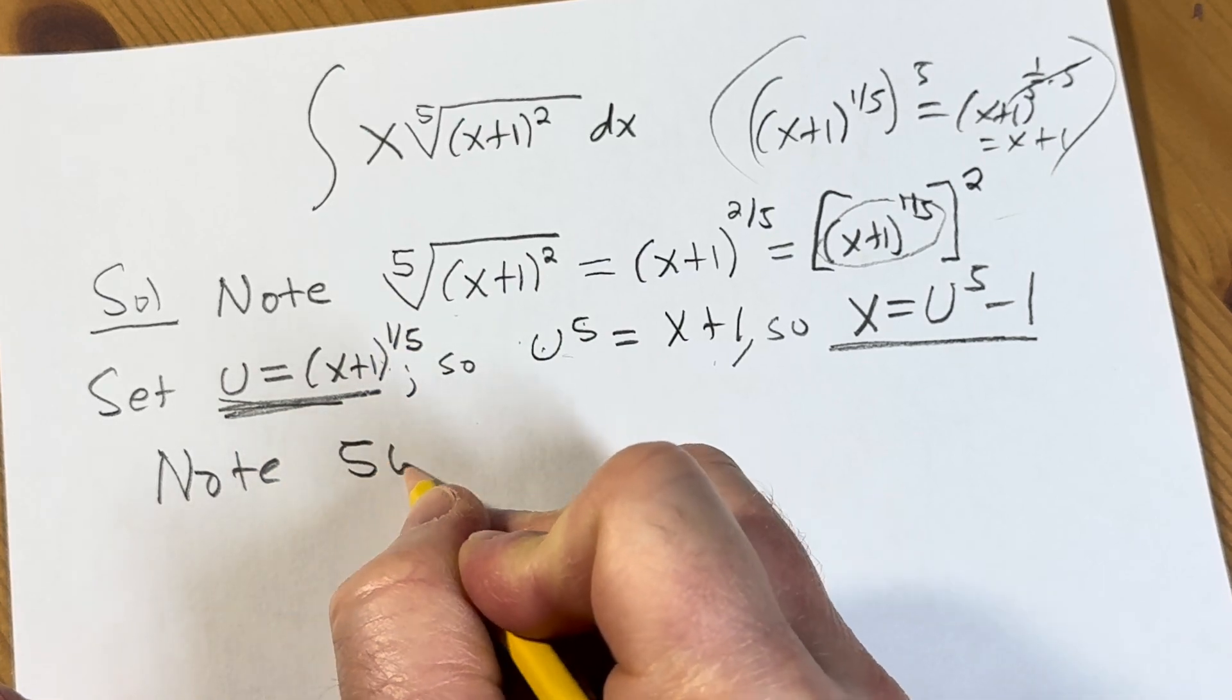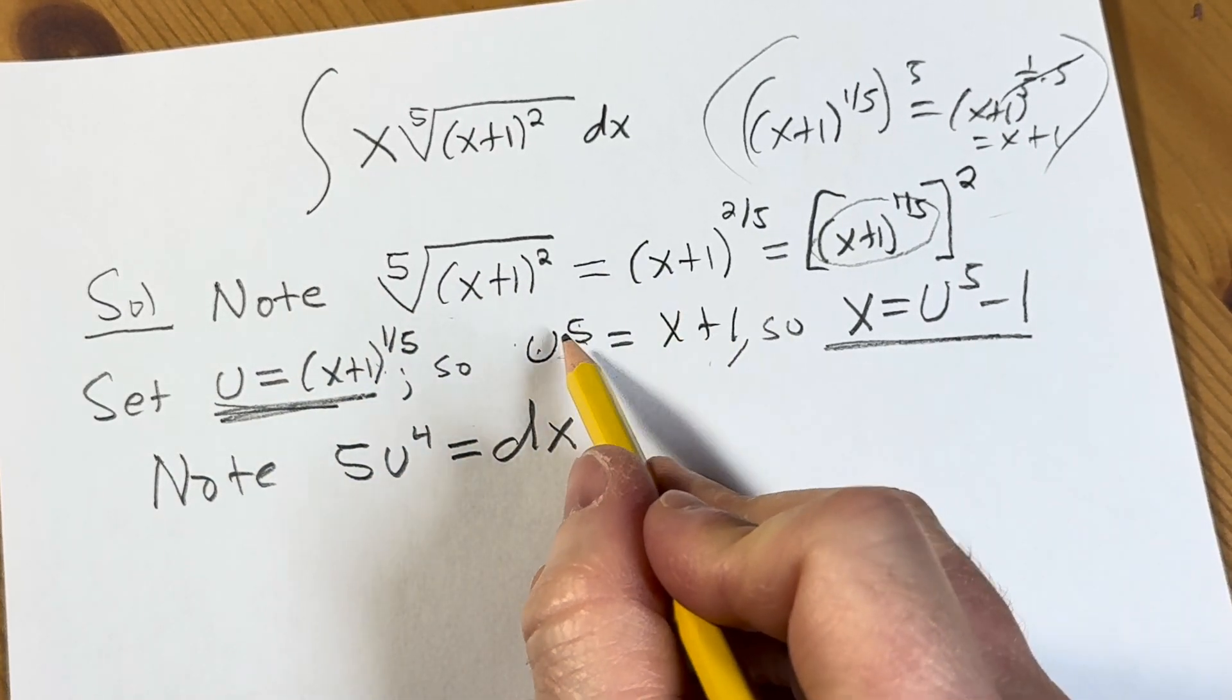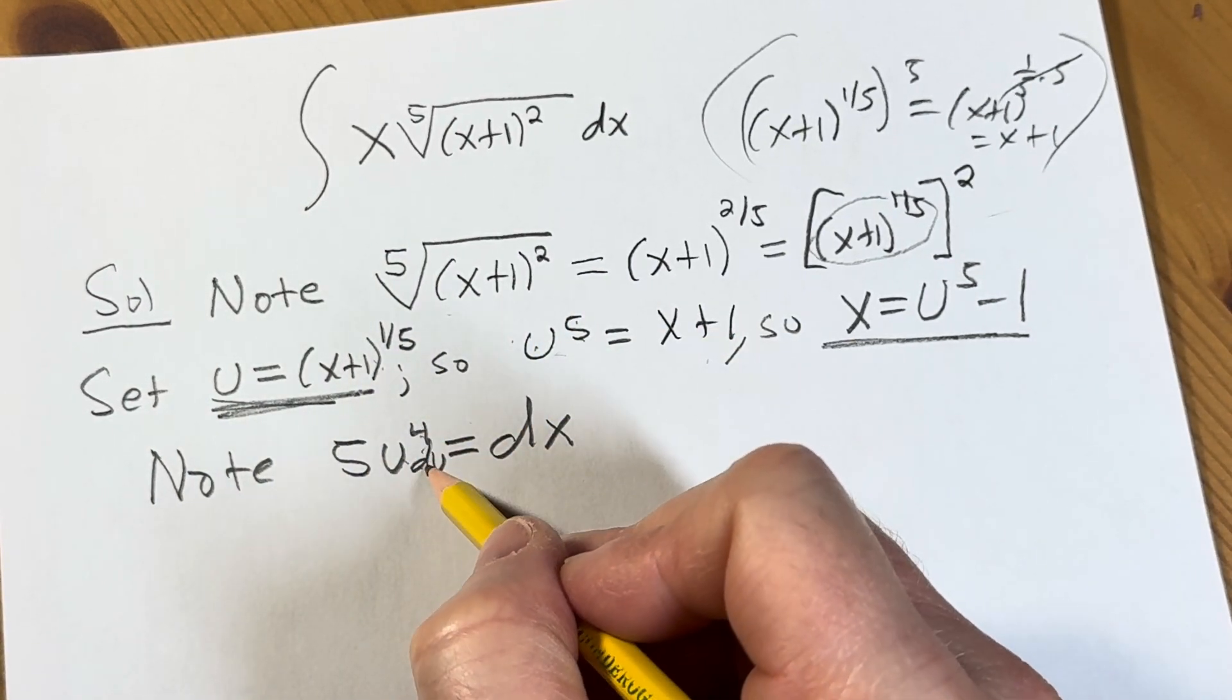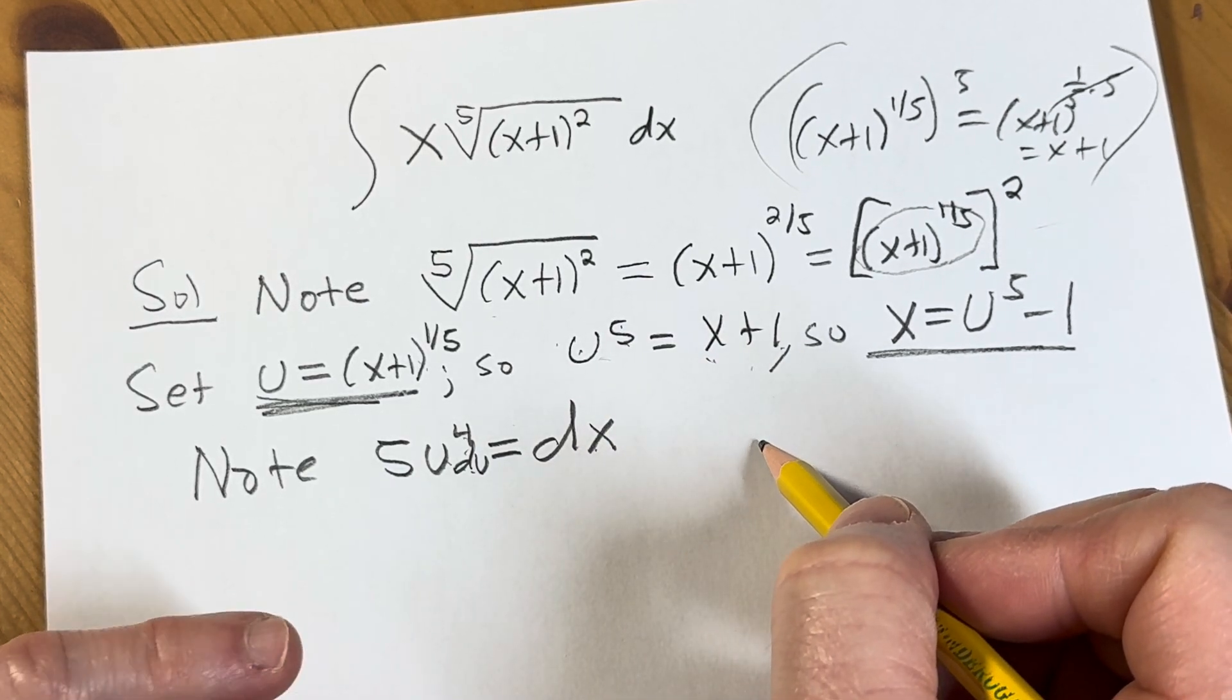So note, 5u to the 4th is equal to dx. Because you bring down that 5, subtract 1 from the exponent, so you get 5u to the 4th du. The derivative of x is just dx. Derivative of 1 is 0. So now we're in a good place.